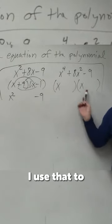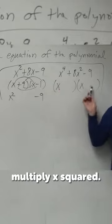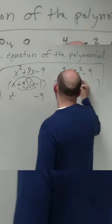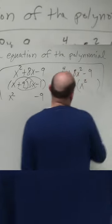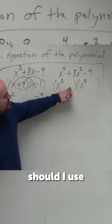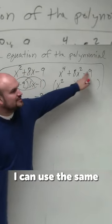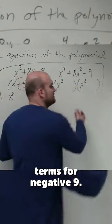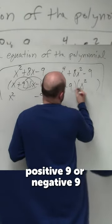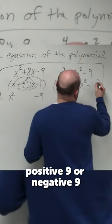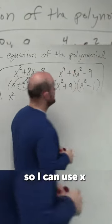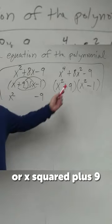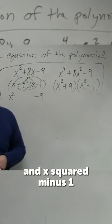So what should I use to multiply x squared? What terms should I use? I can use the same terms for negative 9 or to give positive 9 or negative 9. So I can use x squared plus 9 and x squared minus 1.